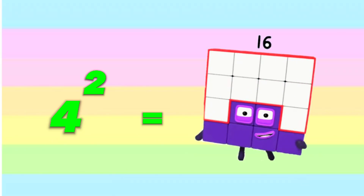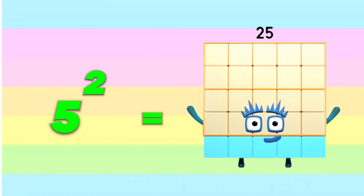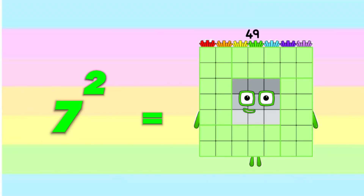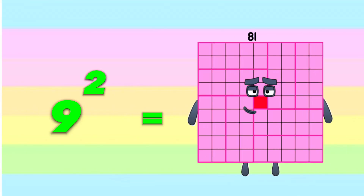4 squared is equals to 16. 5 squared is equals to 25. 6 squared is equals to 36. 7 squared is equals to 49. 8 squared is equals to 64. 9 squared is equals to 81.